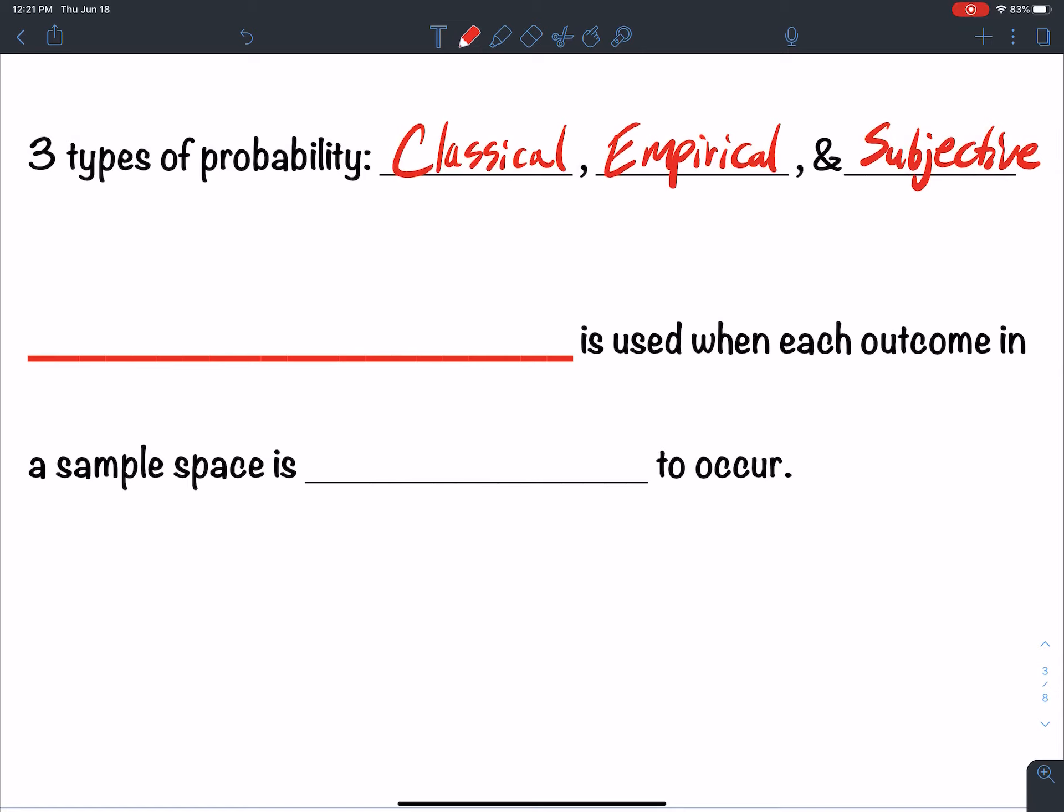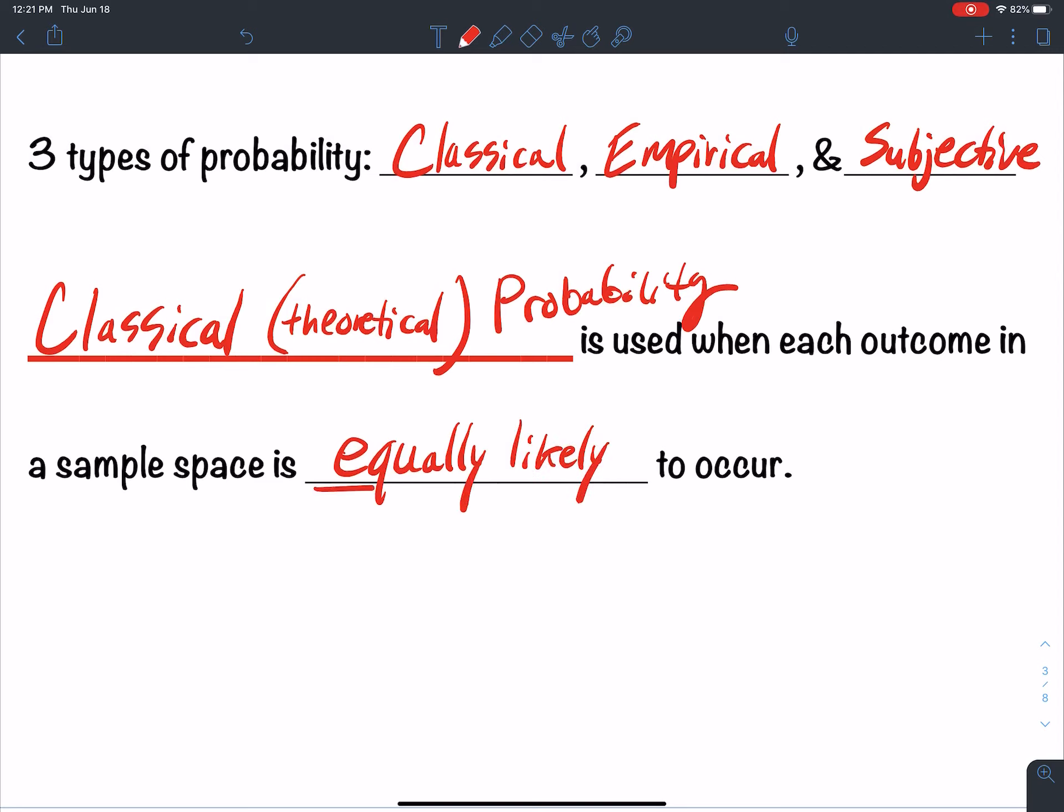The first type we're going to talk about is classical. Classical, also known as theoretical probability, is used when each outcome in a sample space is equally likely to occur.